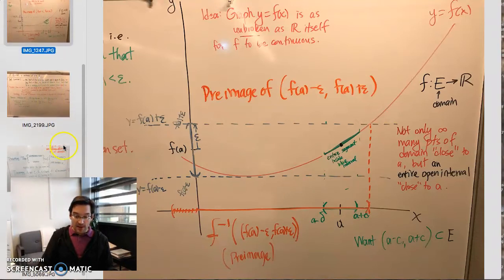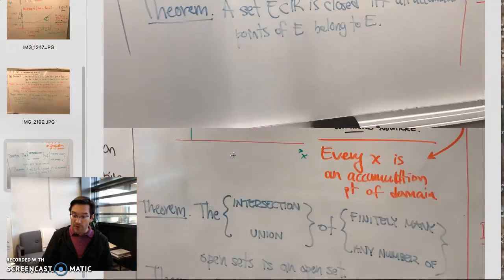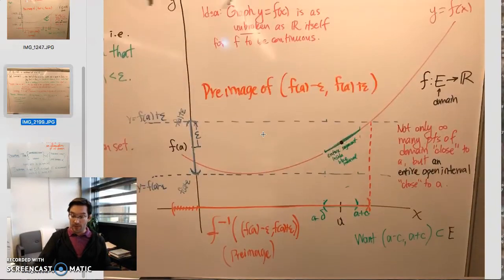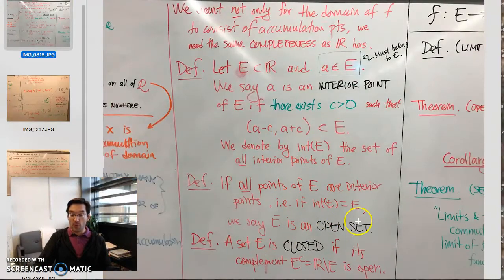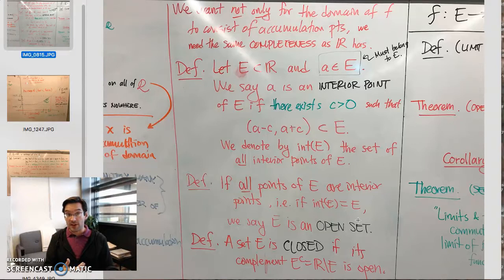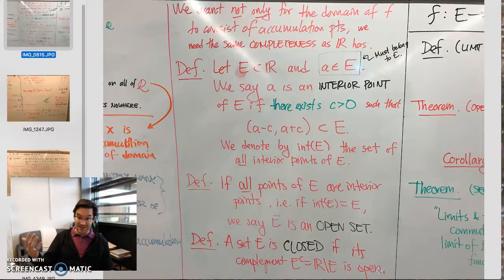The last topic we covered was the properties of openness and closeness and how they interact. Once we define what it means for a set to be open, we can use that to define what it means for a set to be closed. The definition I prefer is that a closed set is exactly one whose complement is an open set — if you take an open set and look at all points not in that set, what you get is, by definition, a closed set.